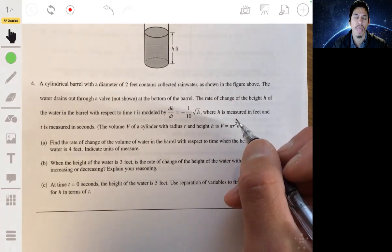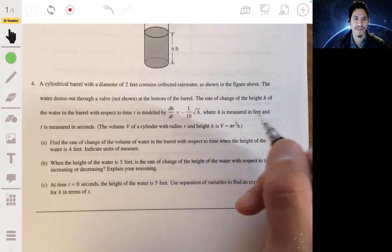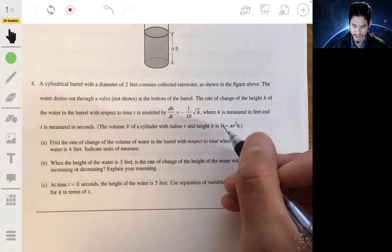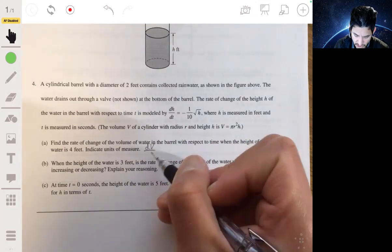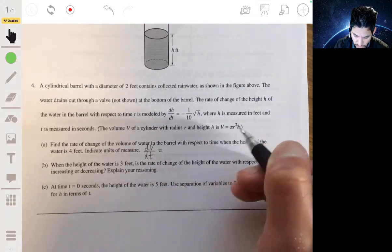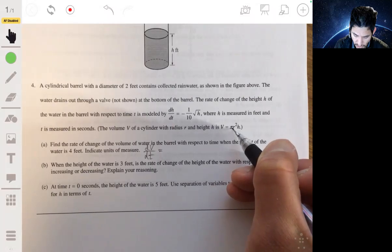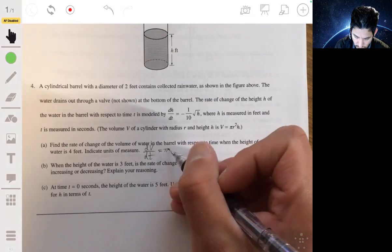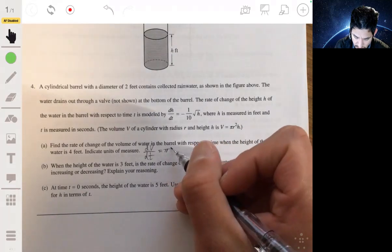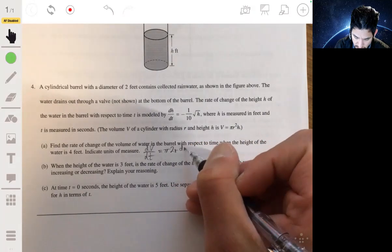probably what you got to, related rates is also what it was called in probably chapter two in your calculus course. So we find dv/dt. And that'll be, remember, r and h are your variables, so you're going to have like product rule. So pi times 2r times dr/dt,